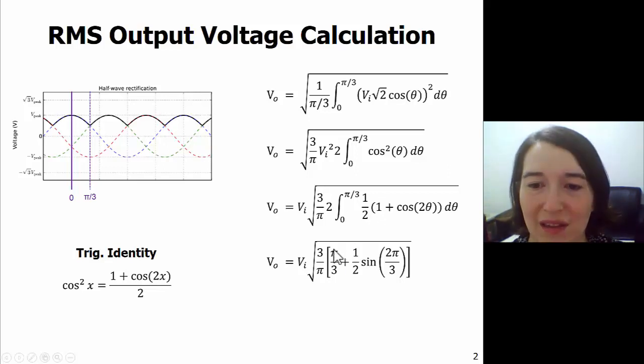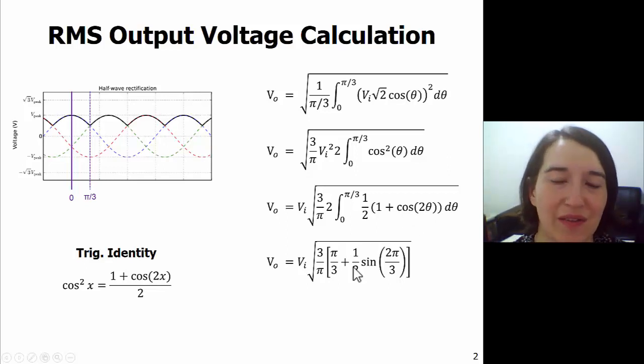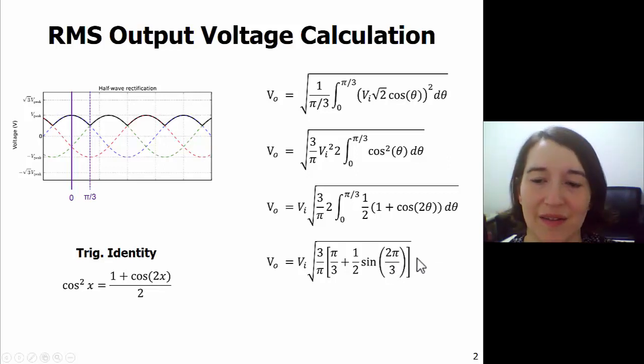Then we evaluated the one, we get this value here, and then we evaluate the integral of the cosine. And remember, because there's a two here, we have to multiply by a half, and what we'll be left with is sine of two times pi over three. We also have a sine of zero, but that was zero, that went away.